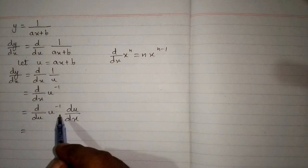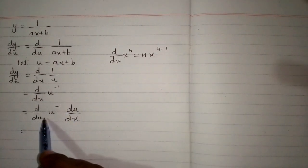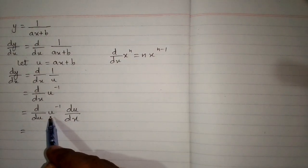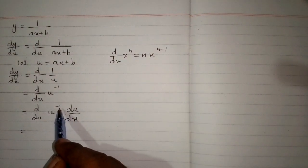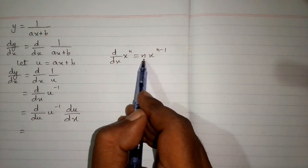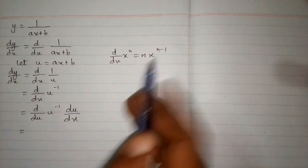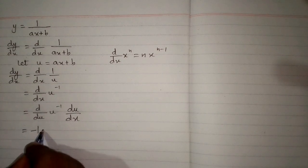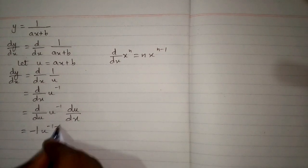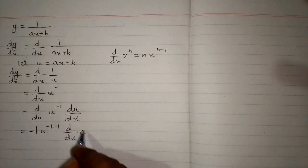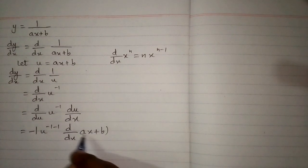Now we have the same variable, so we can apply this formula. We have minus 1 in place of n, so we write minus 1 times u to the power (minus 1 minus 1), multiplied by the derivative of u, which is ax + b.